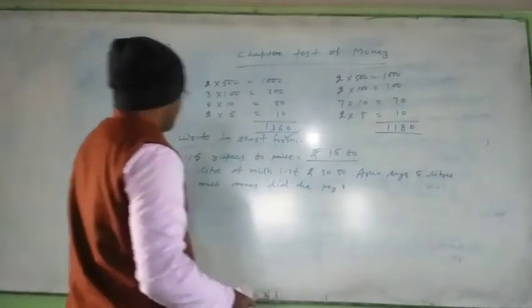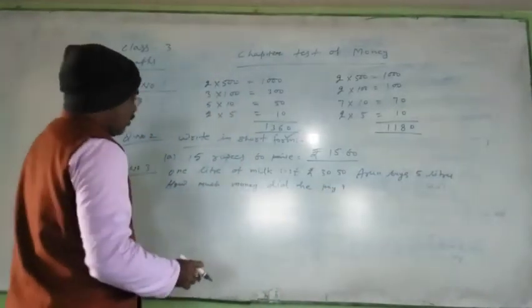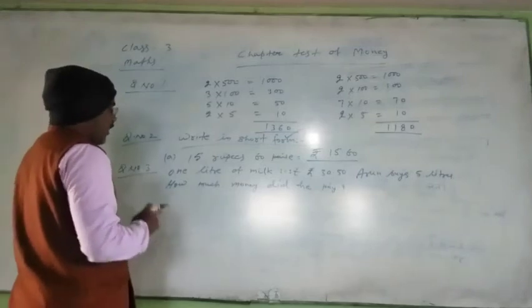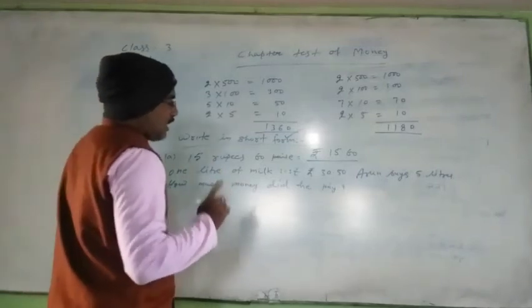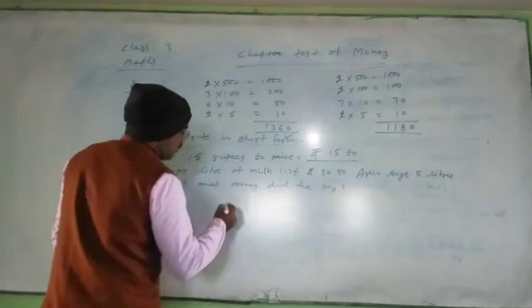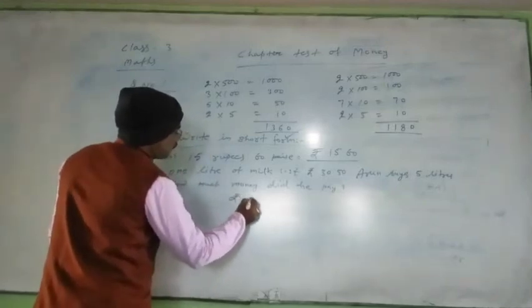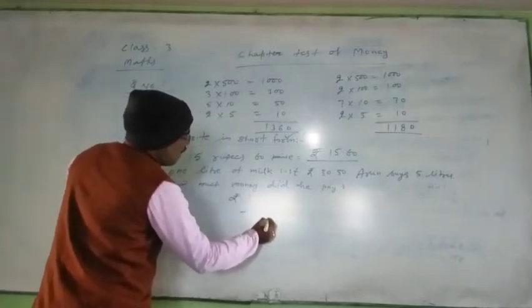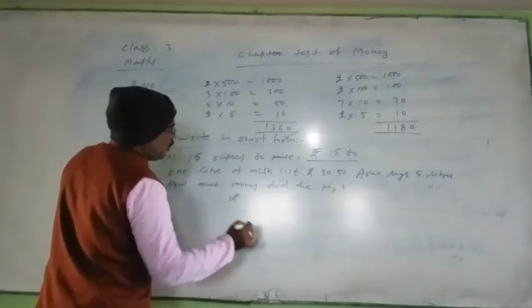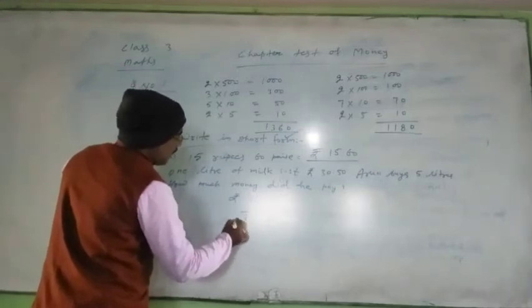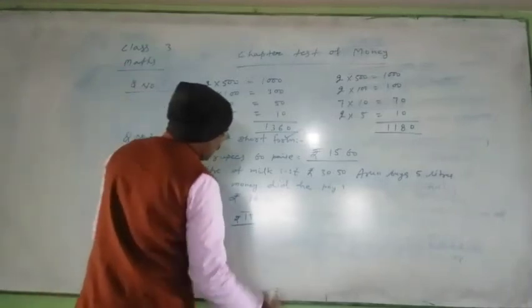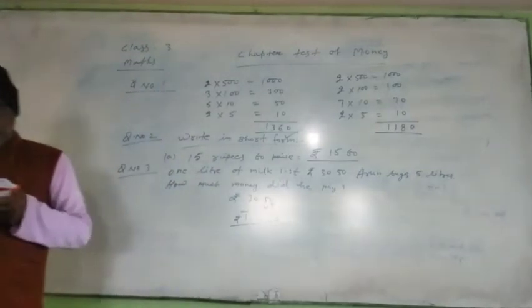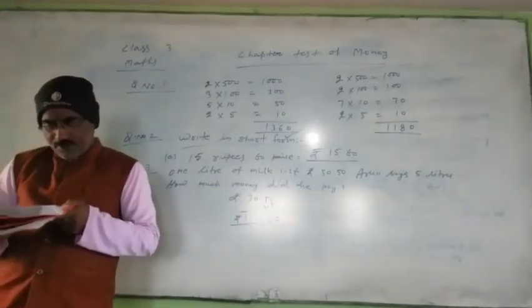You see, cost of one liter milk is 30.50. Therefore, for five liters, you must multiply 30.50 by 5. So you multiply: 5 times 0 is 0, 5 times 5 is 25 carry 2, 5 times 0 is 0 plus 2 is 2, 5 times 3 is 15. You write rupees 152.50. In this way, you can solve question number 4 easily.